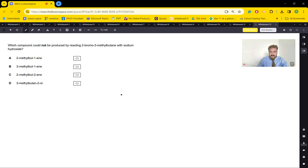Okay, so this question is about organic chemistry and it says which compound could not be produced by reacting 2-bromo-3-methylbutane with sodium hydroxide. We need to remember that there are two types of reactions that can happen with sodium hydroxide with a haloalkane, and that's really what the test is on here.